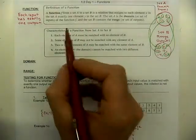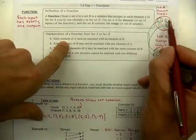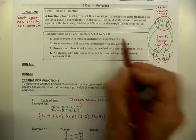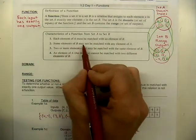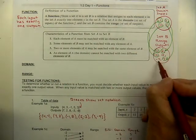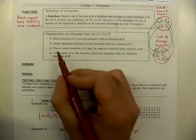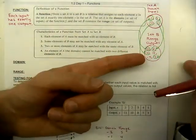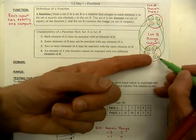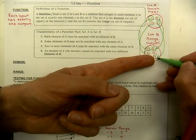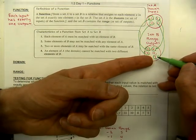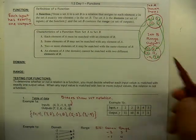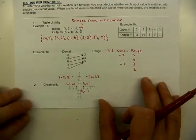There are some qualities of these functions. Each element of set A must be matched with an element of B — meaning one element of B. Some elements of B may not be matched; that's okay. Two or more elements of A may be matched with the same element of B. For example, if one is paired up to seven, and two is also paired up with seven, that's okay — you can have the same answer. The question is how many answers are we getting? We want exactly one answer, even if it's the same answer every time.